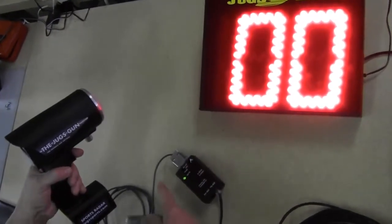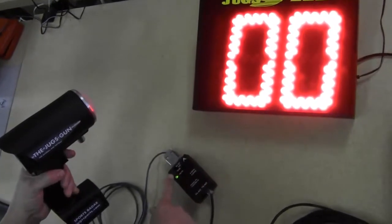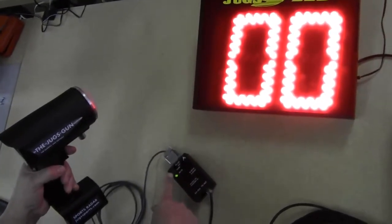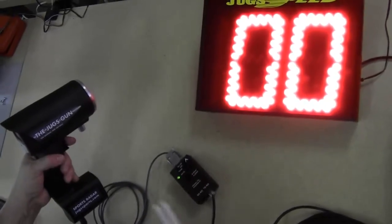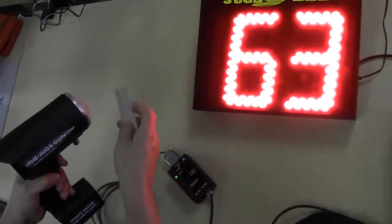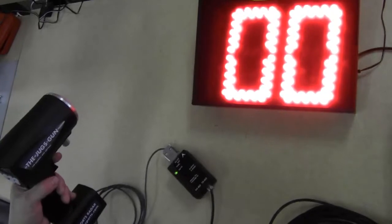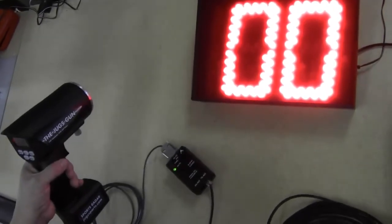And every time we measure the speed, you're going to see this light flash, which means that it's sending data from the radar gun to the display. And you'll see the numbers showing up on the display. So that's all that's necessary to connect these together.